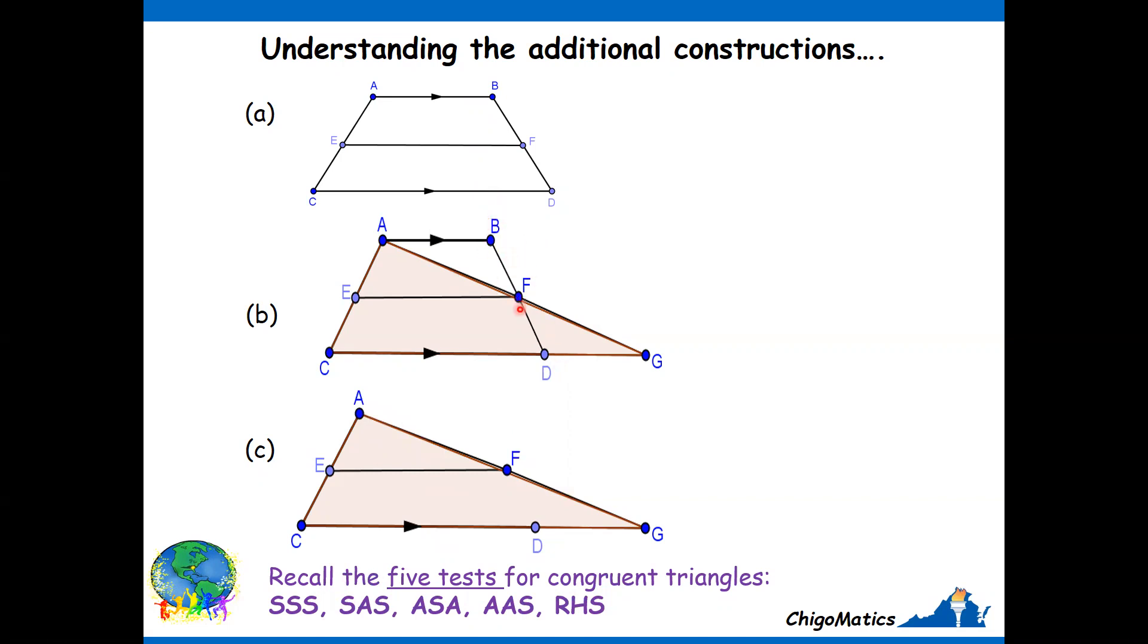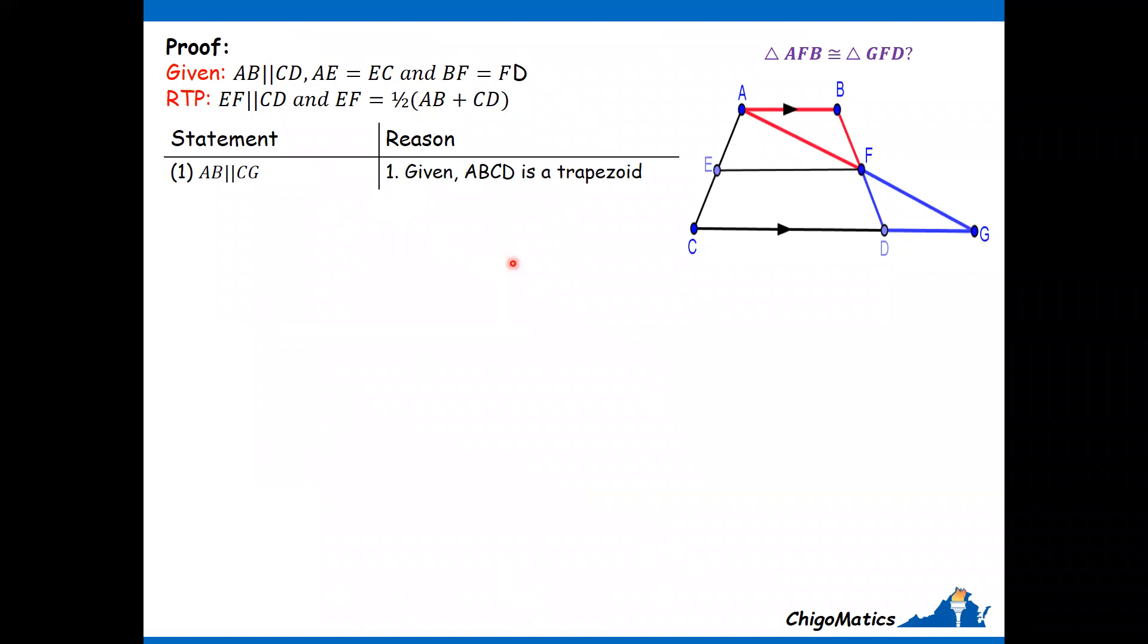We know that BF and FD are equal from the original trapezoid. We don't have another side that we know is equal. This angle and this angle are equal, vertically opposite. We noted that CG is parallel to AB. Therefore, the test we should use is angle-angle-side because we only have one side and the other two are angles.